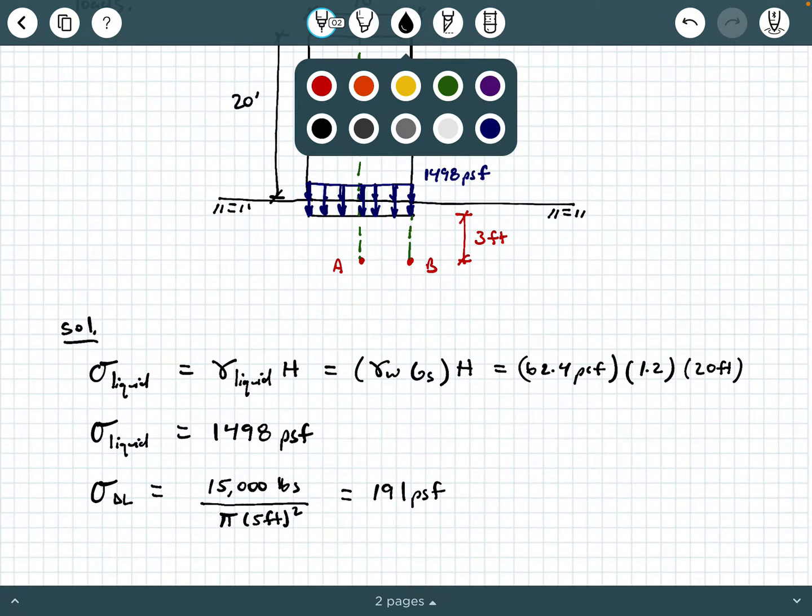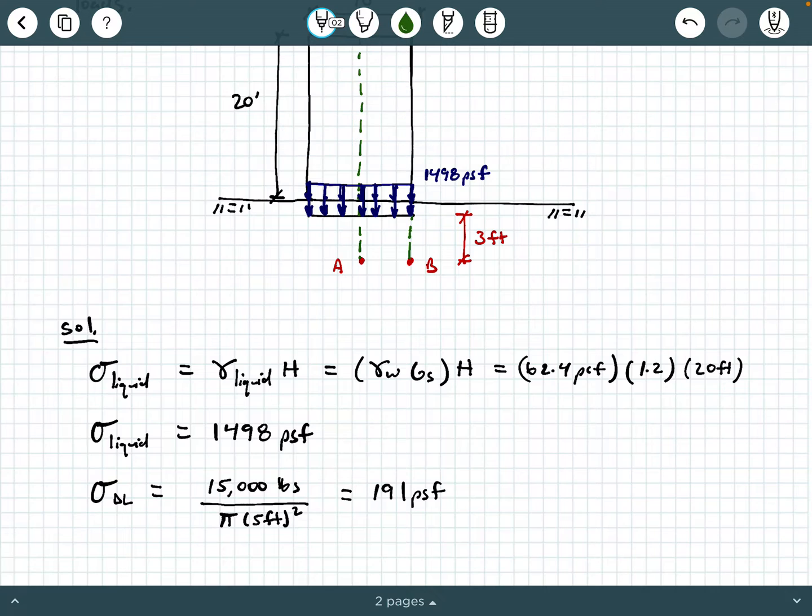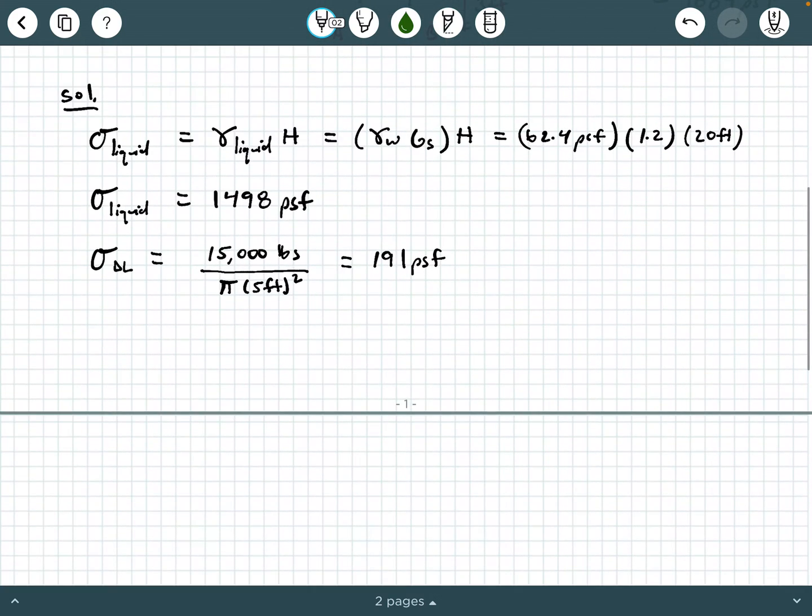So in total here, we have a total stress distribution due to the empty tank and its contents of 1498 PSF plus 191 PSF. So adding that up, we get 1689 PSF as the total stress at the base of the foundation.